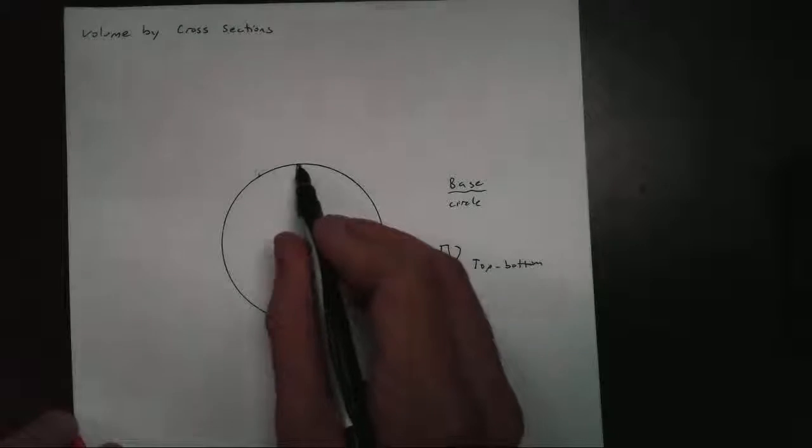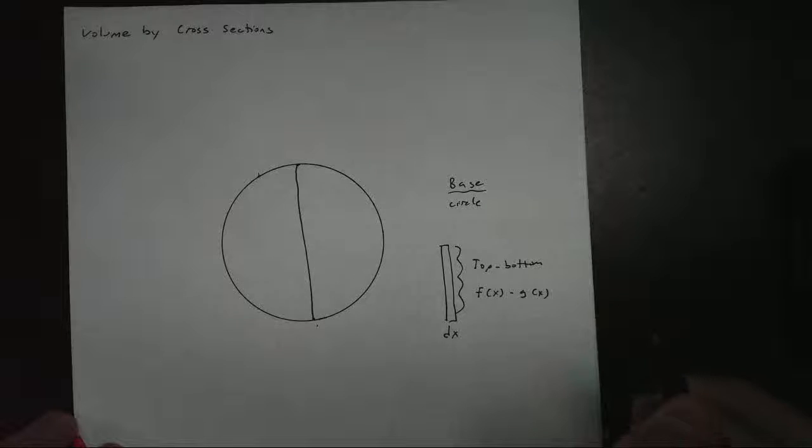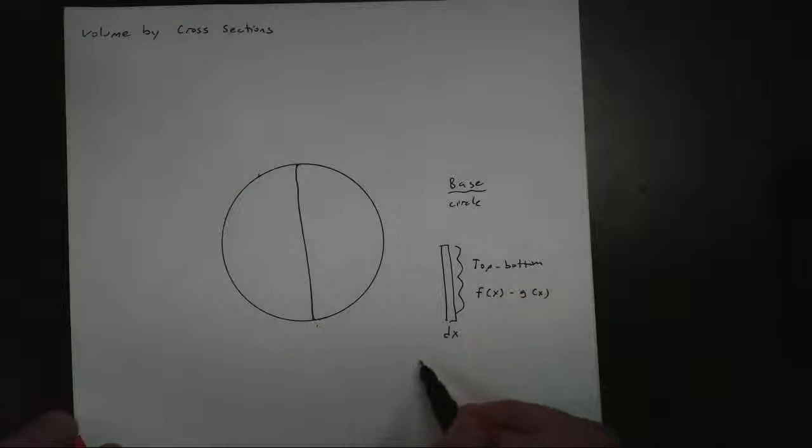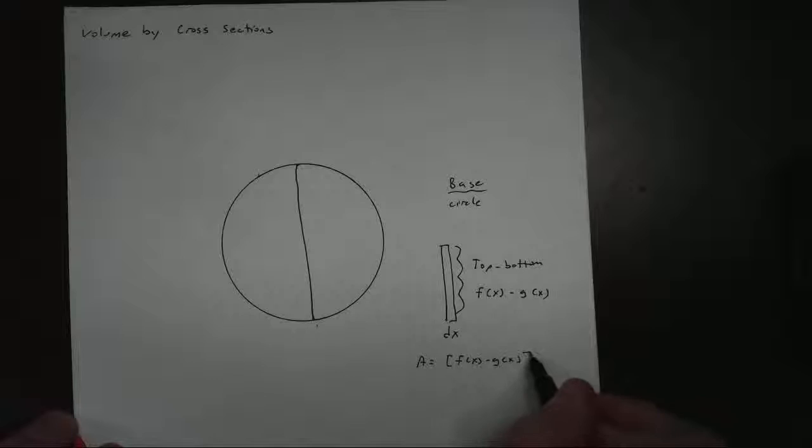So if the top function is a circle, and so is the bottom function, it's going to be basically like f(x) minus g(x). So the area of my rectangle, which is right here, is going to be [f(x) - g(x)] dx. And there's my area.